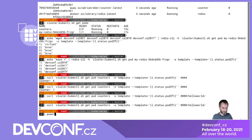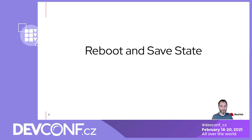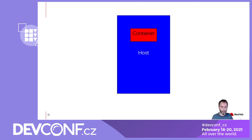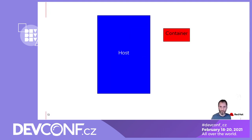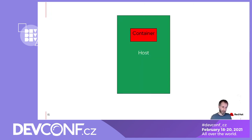That was the first use case: reboot and save state. Here's a small diagram: we have the host with its memory (blue) and a container (red, its own memory). When we checkpoint, the container and its memory state are written to disk. The host reboots — it's gone — then starts back up again. Now the OS is using different memory (green), but the same red container is running as before.